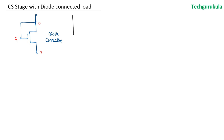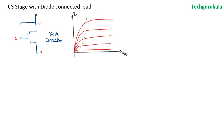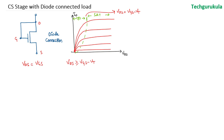Now let's see the IV characteristics to understand where this diode-connected MOSFET will be operating. We know this is the saturation region and this is the triode region or linear region. The demarcation line between the triode region and saturation region corresponds to VDS equal to VGS minus VT. Now, in this diode-connected MOSFET, we know that VDS is equal to VGS. Obviously, if a MOSFET has to be in saturation region, VDS should be greater than or equal to VGS minus VT. Since VDS equals VGS, obviously VGS will be greater than VGS minus VT.